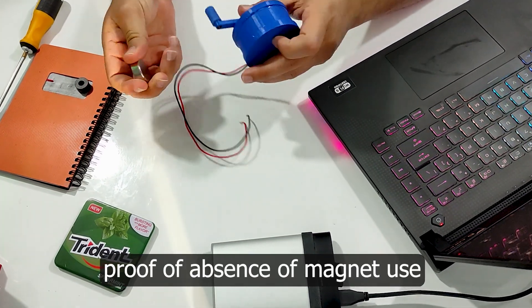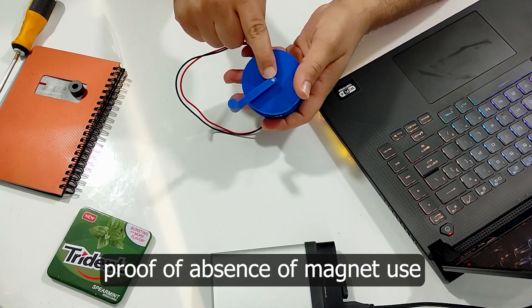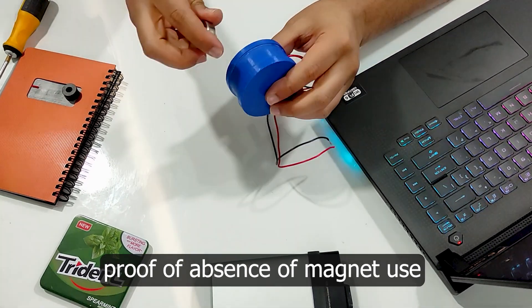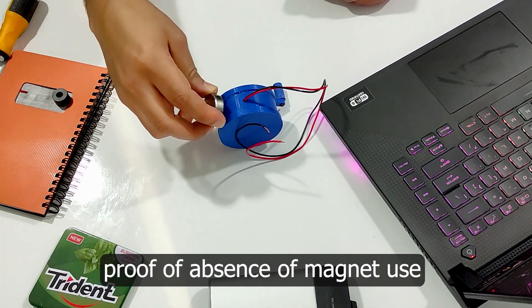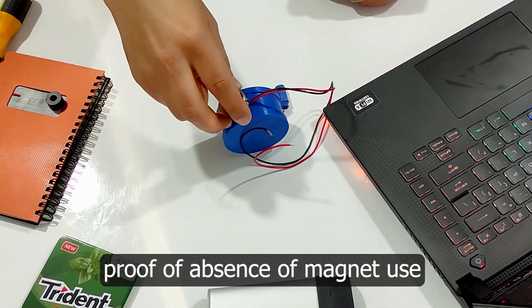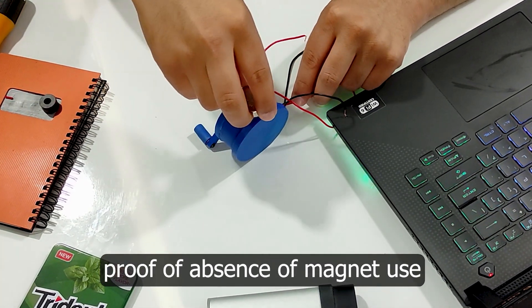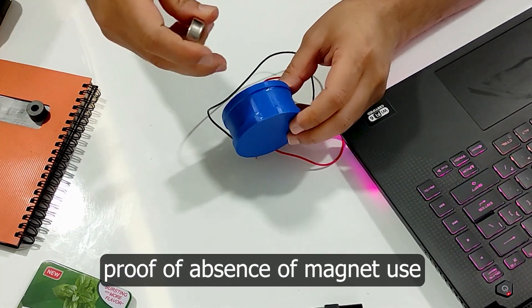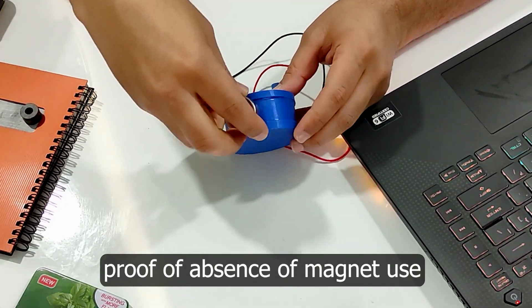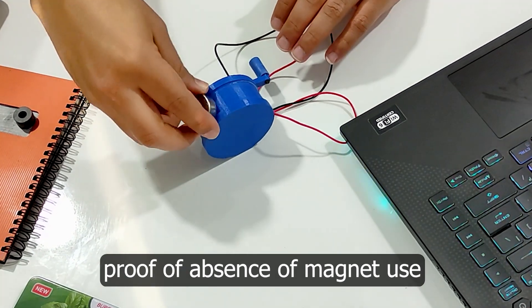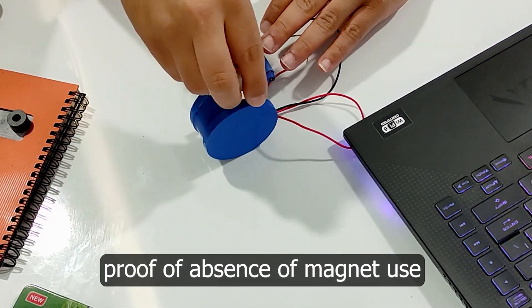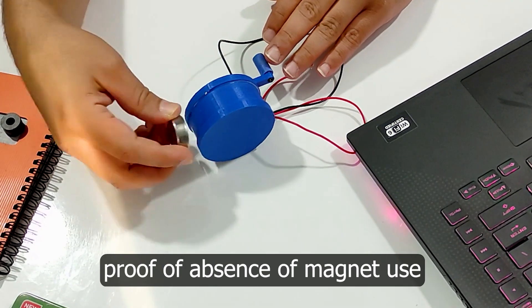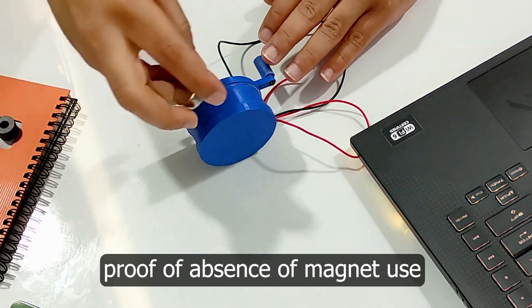Let's delve into the remarkable advantages of a generator without the need for magnets. This innovation brings forth a paradigm shift in energy generation with benefits that extend beyond conventional methods. By eliminating the dependency on magnets, this generator significantly reduces the complexities involved in the manufacturing process. Traditional generators require the precise alignment of magnets, which can be time-consuming and resource-intensive.